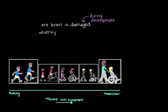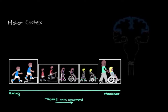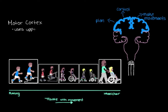The first movement area we'll look at is the motor cortex. The motor cortex is really important for helping us plan, control, and make voluntary movements. In order to accomplish our voluntary movements, the motor cortex uses special neurons called upper motor neurons to communicate messages to our muscles.